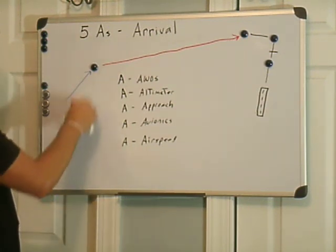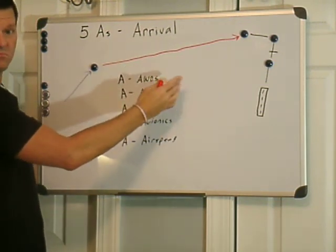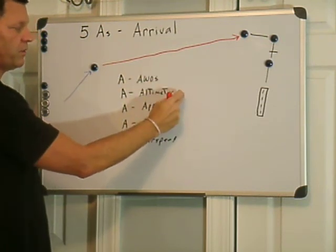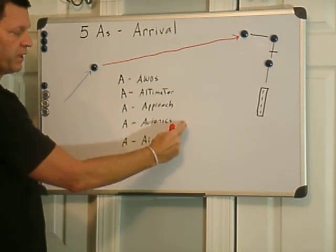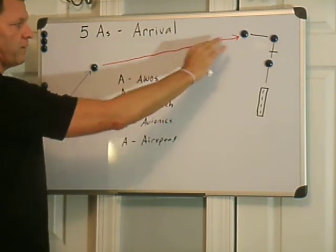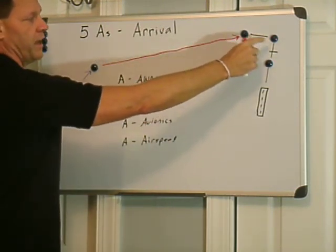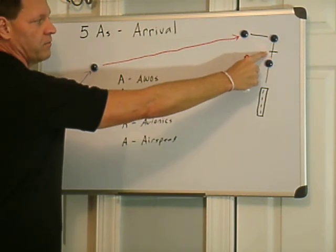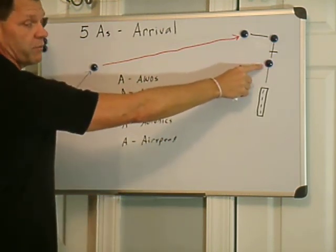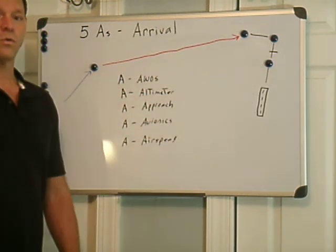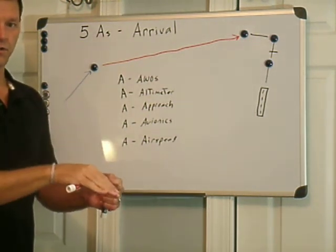So here we are, we reach the arrival fix transition, check our AWOS, ASOS, ATIS, etc. Update the altimeter, select the approach, confirm this with air traffic control, configure the avionics, perform whatever checklists we need to perform, initial descent before you ever reach the initial approach fix, and then final, a couple of miles outside the final approach fix, and then make sure that when we cross the final approach fix, we're configured for the right airspeed for a normal descent and stabilized descent to the missed approach point and landing.